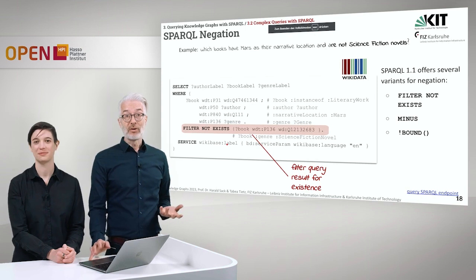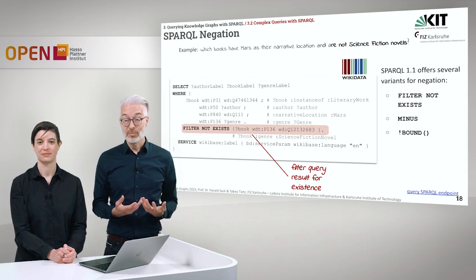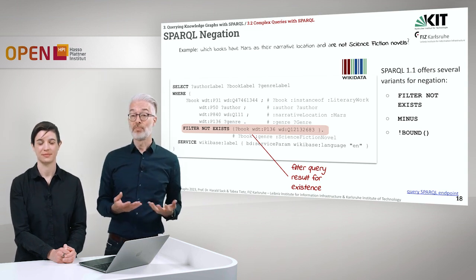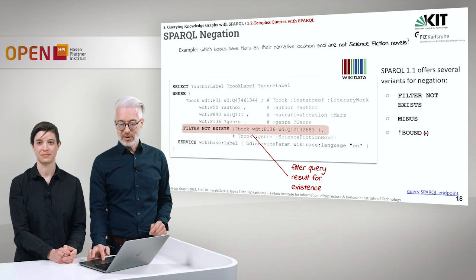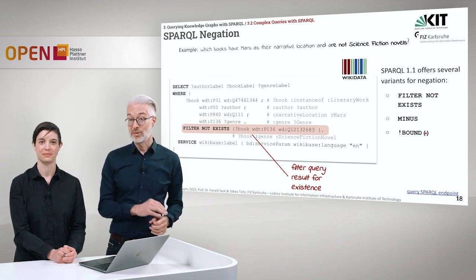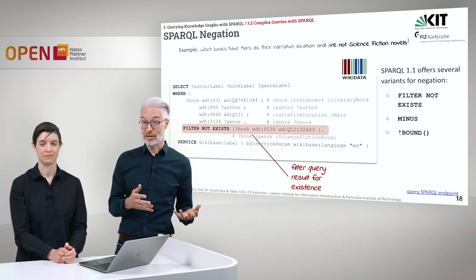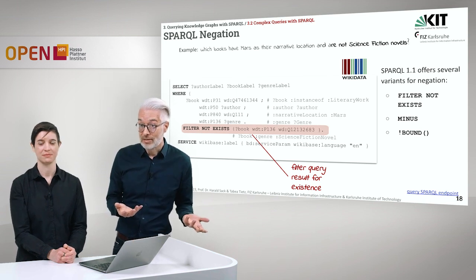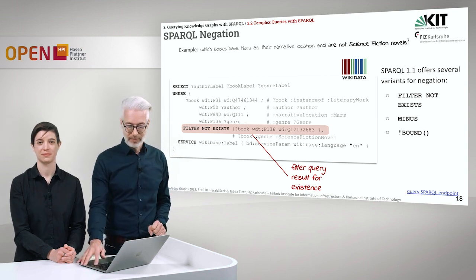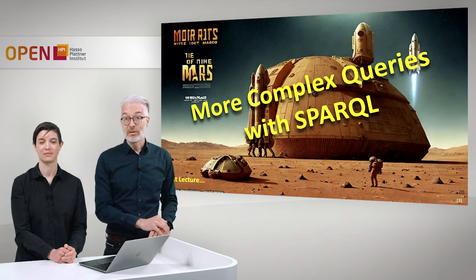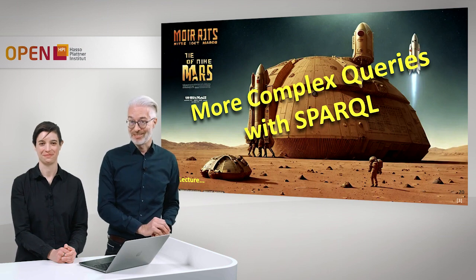This is not the only way to filter or negate things. Besides FILTER NOT EXISTS, we also have the keyword MINUS or NOT BOUND. The unary operator BOUND checks if a variable has a result. NOT BOUND asks for a variable not having a result, which is the same as a negation. There are several variants to do the same thing and you can use whichever you prefer. In the next lecture, you will see many more complex queries with SPARQL. See you next time.